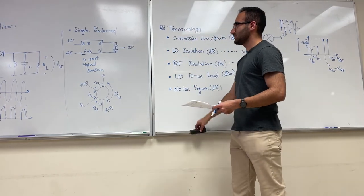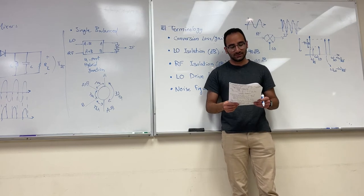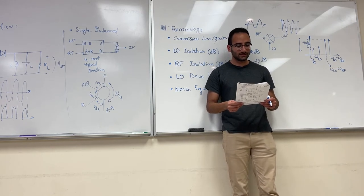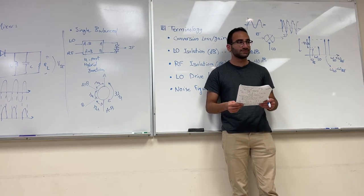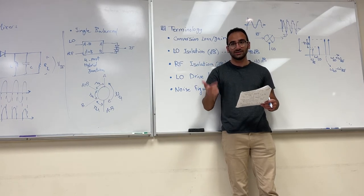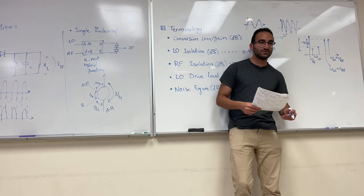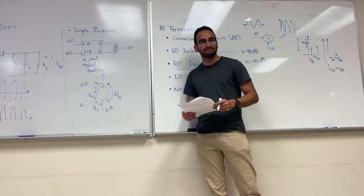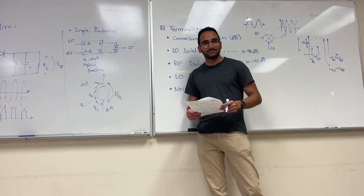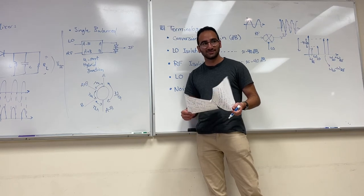The last one is the double-balanced mixer, which is basically what we studied. The diode ring mixer is considered a double-balanced mixer, and it gives you both LO and RF isolation — so you're not going to see those two frequencies once you build your diode ring mixer. Any questions about mixers in general? That's all about the mixers.